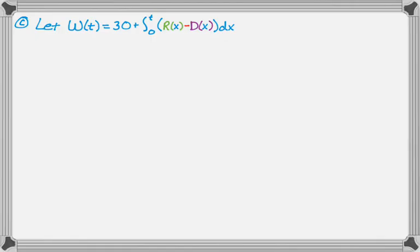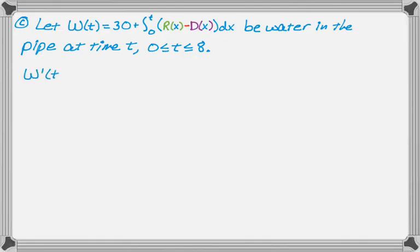So I need to find the derivative of that. That's the water in the pipe at time T, where T is between zero and eight. Now I need to find the derivative of that. So that's the second fundamental theorem, but we also already know that W prime of T is R of T minus D of T, so rate in minus rate out. Makes sense. I need to find the critical point.